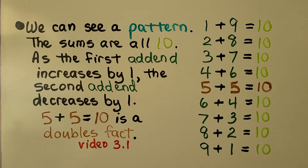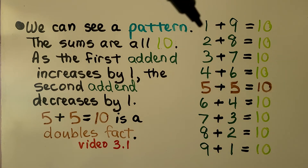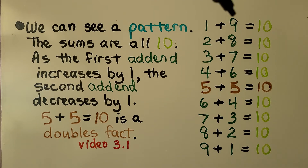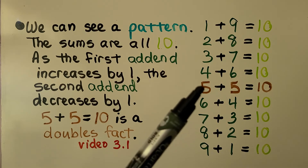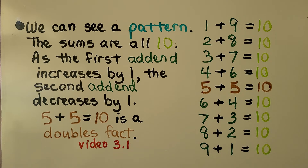We can see a pattern. The sums are all 10. As the first add-end increases by 1, the second add-end decreases by 1. And 5 plus 5 is a doubles fact. We learned about doubles facts in video 3.1, which is linked in the description.